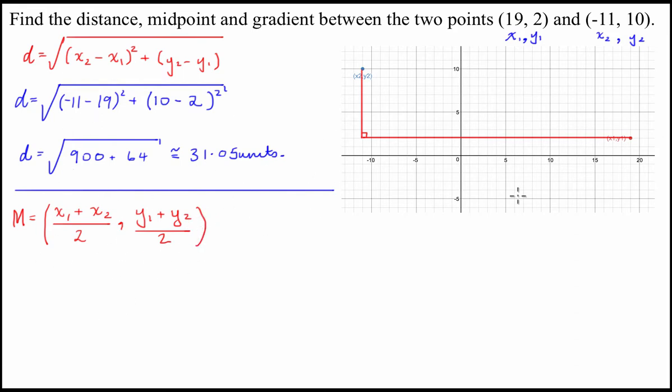So, what we can do is we can sub in our numbers. We have x1 and x2, which is 19 and -11. So, M is going to equal (19 + -11)/2, comma, y1, which is 2 plus 10 divided by 2. And we have 19 take 11 is going to be 8 divided by 2 equals 4. And we have 2 plus 10 is 12 divided by 2 is 6. So, our midpoint is equal to (4,6). So this is the answer to the first one. That is the answer to the second one.